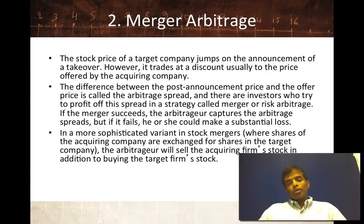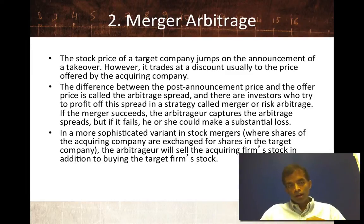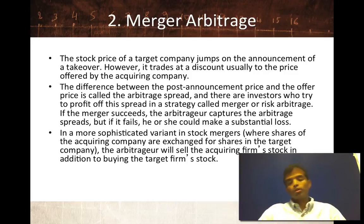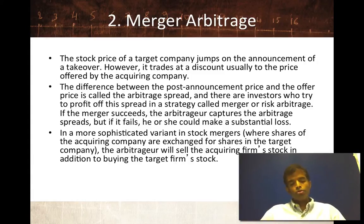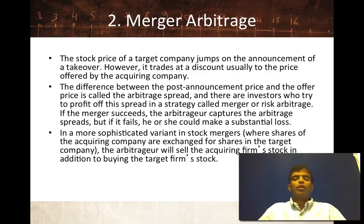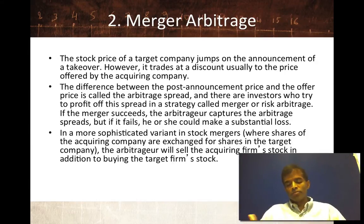The second strategy is merger arbitrage — and as I mentioned in the context of acquisitions in an earlier session, it's really not arbitrage. It's merger speculation. You wait for a takeover to be announced, then bet that the takeover price will get pushed up from the announcement price to the ultimate offer price — that's called the arbitrage spread. You're betting on the likelihood that the spread will come to fruition. If the merger succeeds, you make your money. If the merger fails, the price drops back to where it was before the acquisition was announced — that's your risk. In a more sophisticated version, the acquiring company's stock also enters the picture, and you hold both acquiring and target company stock, making a bet on the combined company's value.